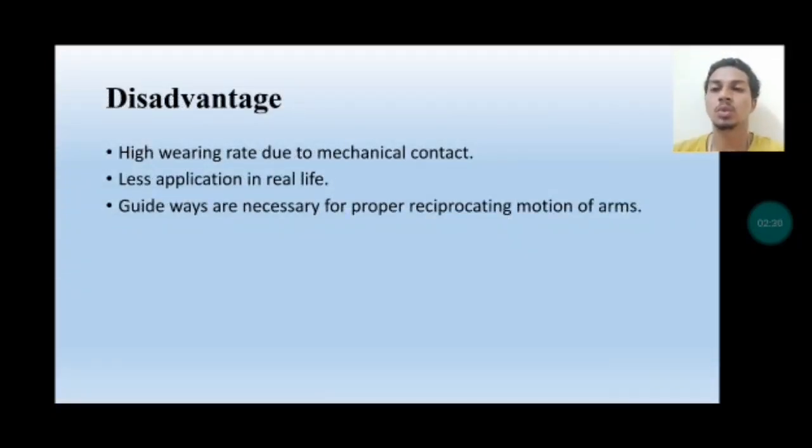The disadvantages of Scotch Yoke Mechanism include: high bearing wear rate due to mechanical contact, less application in real life, and guideways are necessary for proper reciprocation of motion. Without guideways, the mechanism fails.